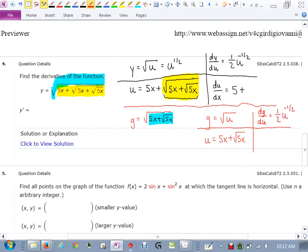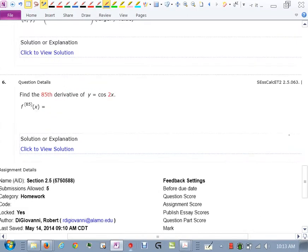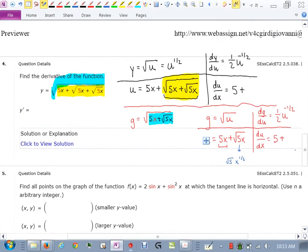And then we take the derivative here of u with respect to x. Now here we're not going to run into a chain rule problem because the derivative of 5x we already know is 5 plus, now this is the same as square root of 5 times x to the 1/2. And I can just treat the square root of 5 as a constant and then use the power rule, bring the 1/2 out.